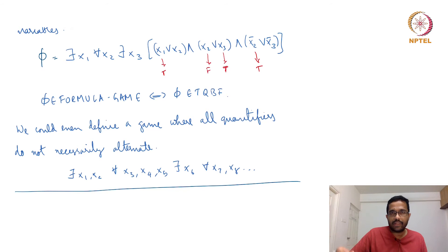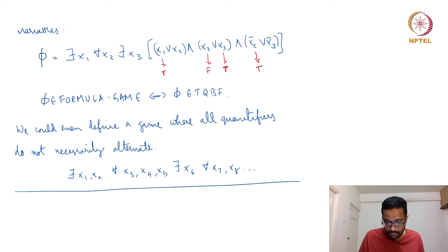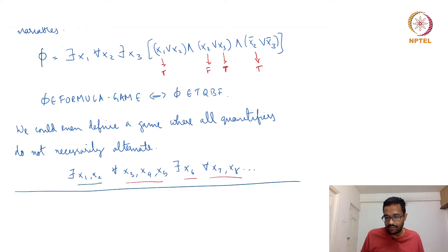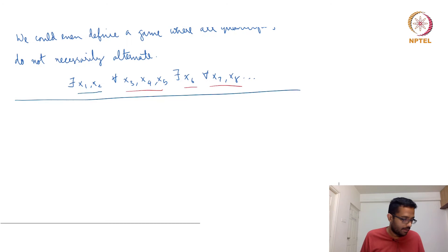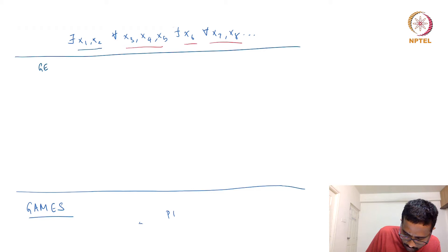Players taking turns with x1, x2, x3 need not be strictly alternating — player one could have two variables, followed by three variables played by player two, and so on. The same general principles apply. Another PSPACE complete game is what is called Generalized Geography.